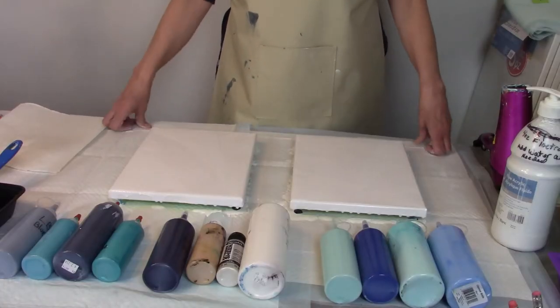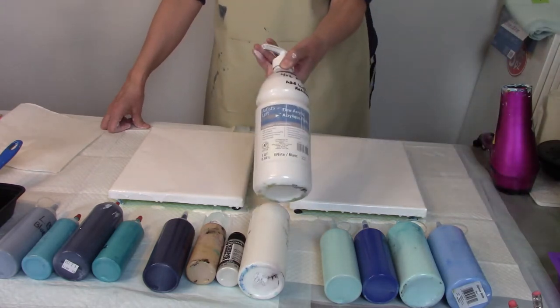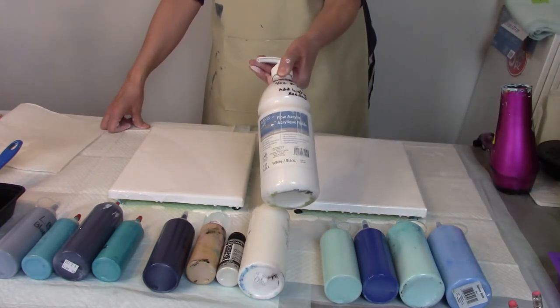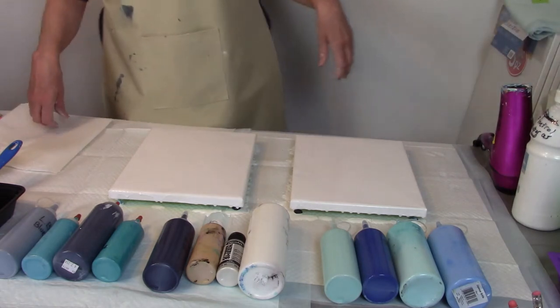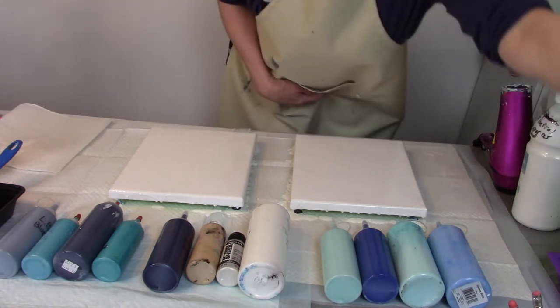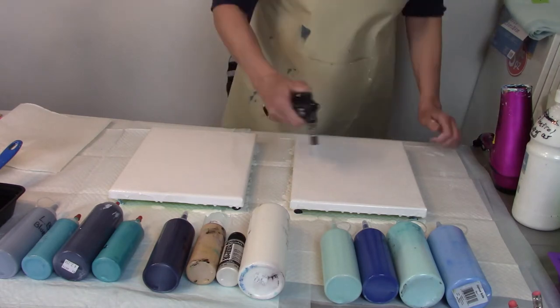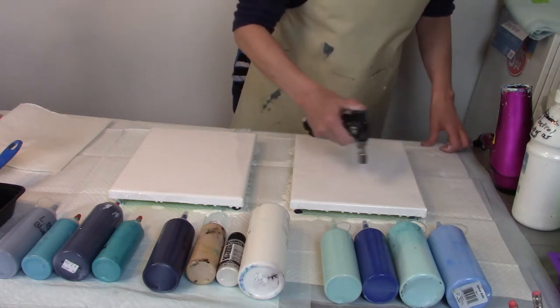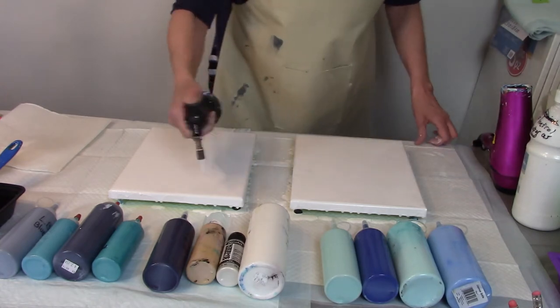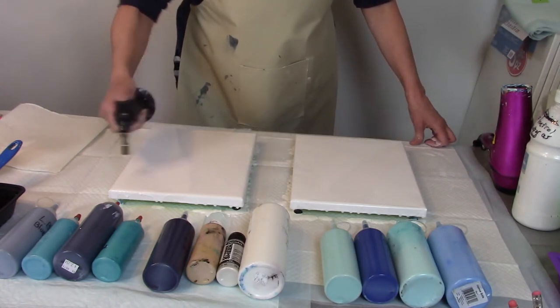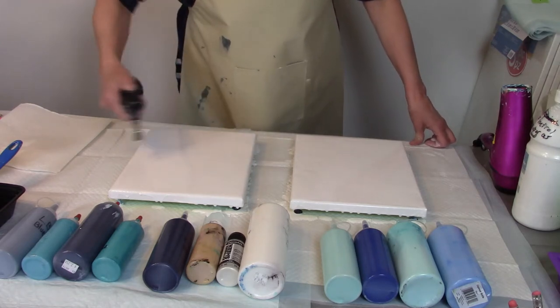I have covered my canvases with my Artist Loft Flow Acrylic White mixed with Floetrol and water. And now I'm going to pop the bubbles to make sure that all of the bubbles in the base layer are popped, so that they don't come up later.